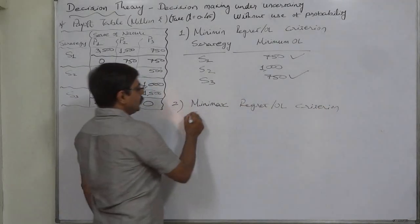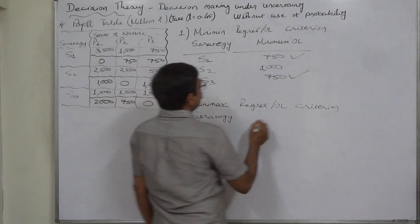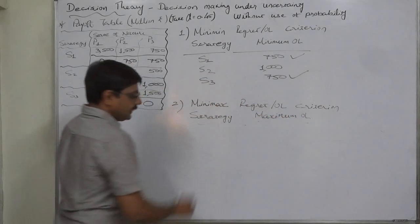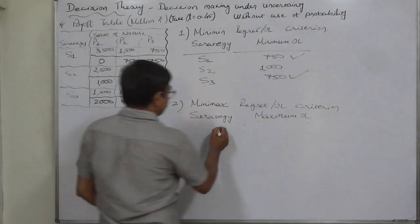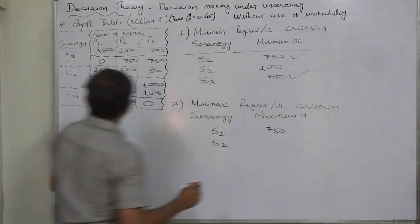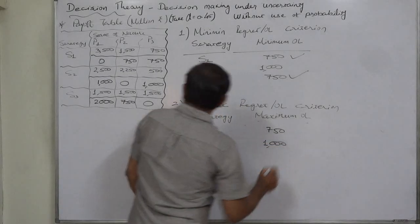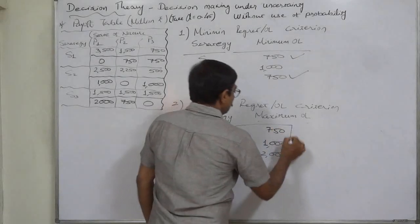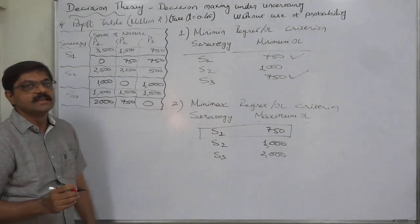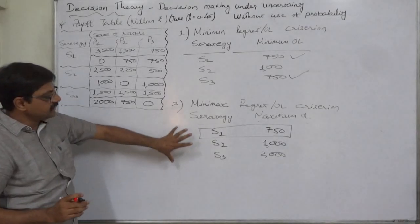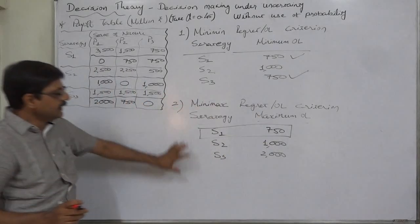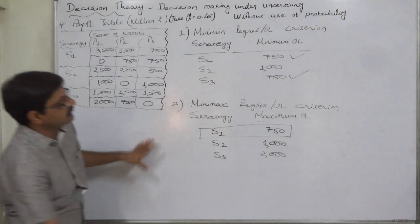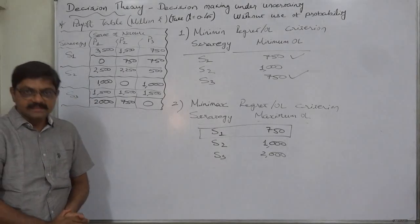The second regret criterion is minimax regret — minimum of the maximum. For all strategies, we find the maximum regret. In case of S1, the maximum regret is 750; in case of S2, maximum is 1000; and in case of S3, maximum is 2000. The minimum of these maximums is 750, and the corresponding strategy is S1. If the decision maker uses the minimax regret criterion, strategy S1 should be selected. So all six payoff and regret criteria in one case have been discussed. Thank you.